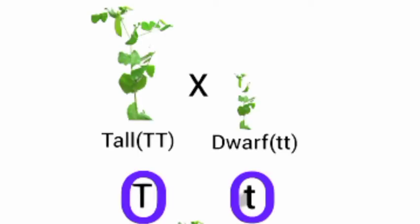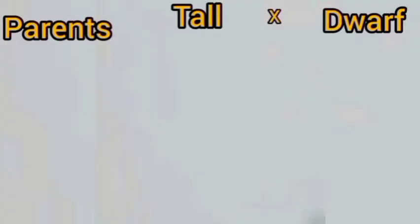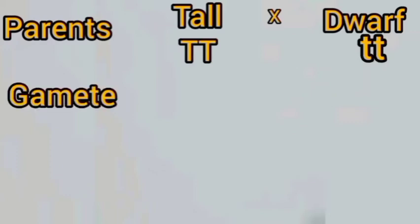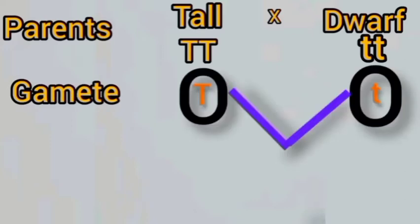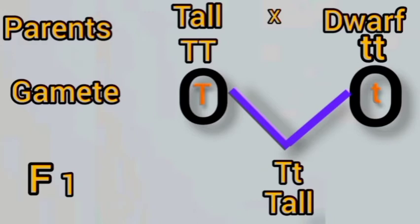Now, what is the condition of the gamete? Each gamete carries only one T. Mendel selected a pure tall plant (TT) and crossed it with a dwarf plant (tt). The gametes carry only one T each. In the F1 generation, all plants are tall with the genotype capital T and small t (Tt).